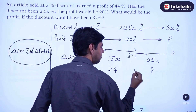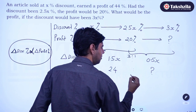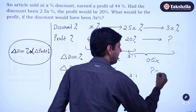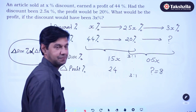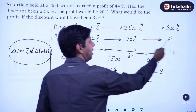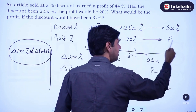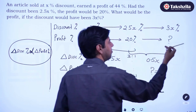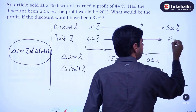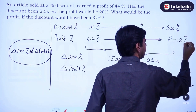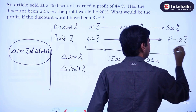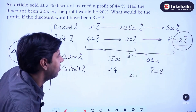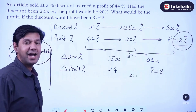Since they are directly proportional, the ratio of 1.5X to 0.5X is 3:1, so the ratio of profit changes will also be 3:1. Therefore the change is 8%. Since discount has gone up, profit will go down, and my answer is 12%. This is the shortcut.